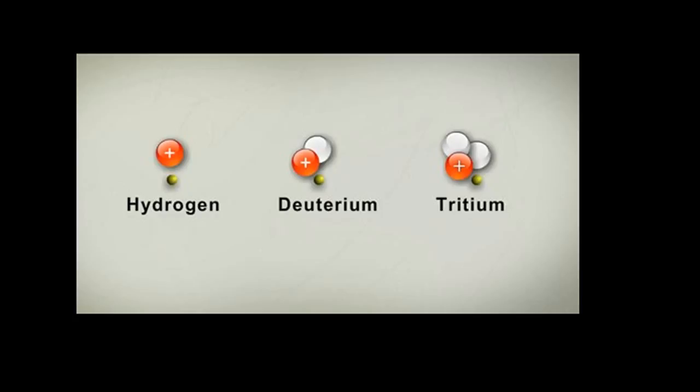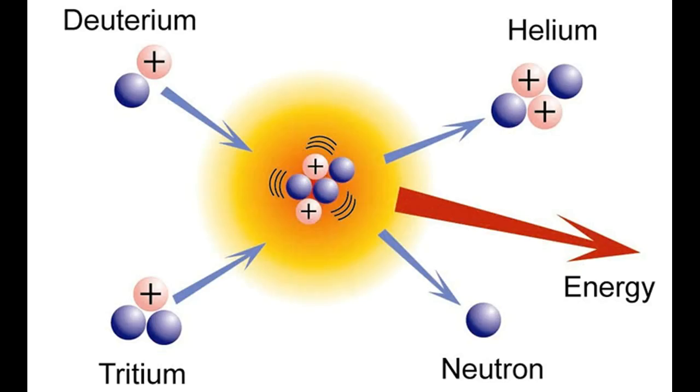When the circumstances are right and the fusion takes place, a new nuclei will form as well as one single neutron. The nuclei is an isotope of helium, namely helium-4. Helium-4 has an AMU of 4.002602. The single neutron has an AMU of 1.008665.